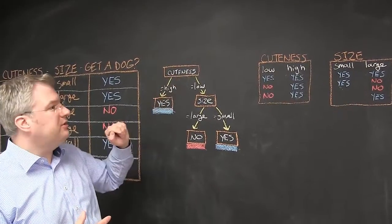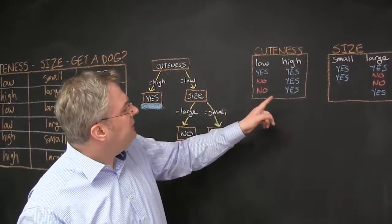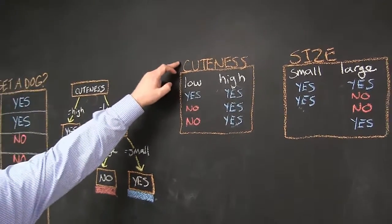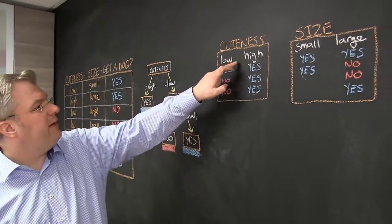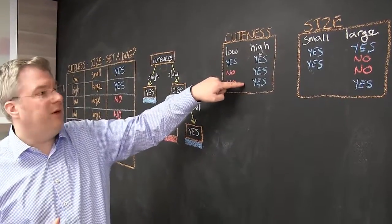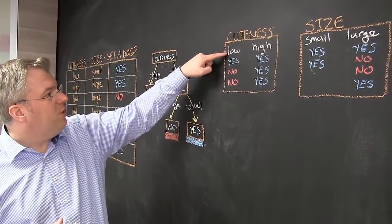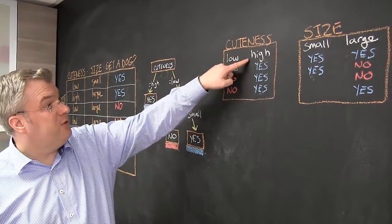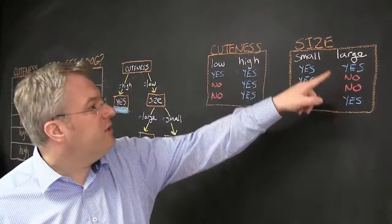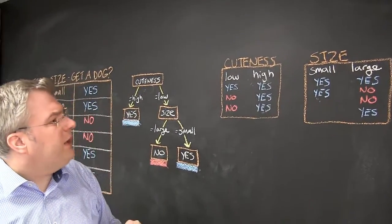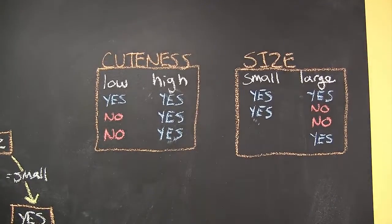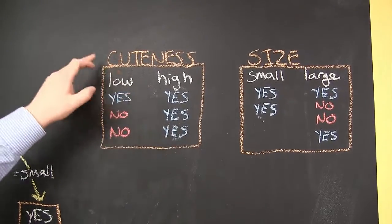So the big question is: how do we make this pick? How do we pick this first attribute at the root? Here is a different way to look at the same data. Let's have a look at cuteness — we can separate the data into two buckets, low and high, and here are the classes for those two buckets. We can do the same thing for size. So Graham, looking at this data now, what attribute would you pick — cuteness or size?